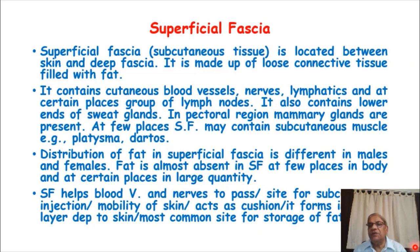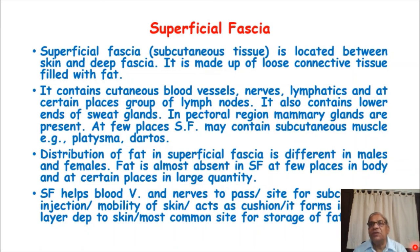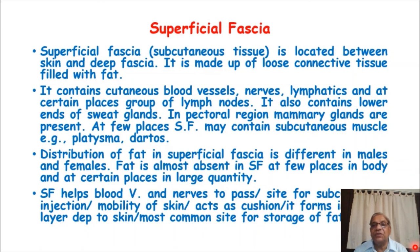Since the superficial fascia is full of fat, it also acts as a storage of energy. Fat contains a lot of energy — one gram of fat gives nine calories. Those who contain a lot of fat have a large reserve of energy stored. In brief, the superficial fascia is a layer of fibro-fatty tissue just beneath the skin and superficial to the deep fascia. Now we will move on to the deep fascia.